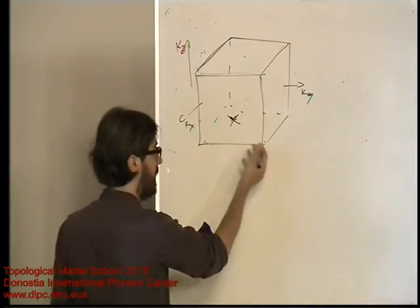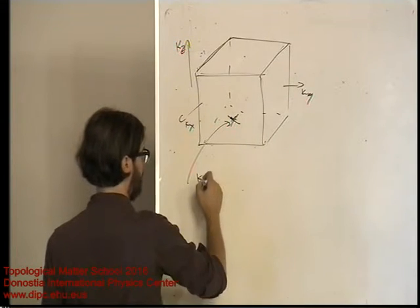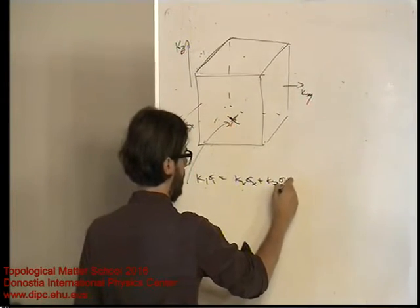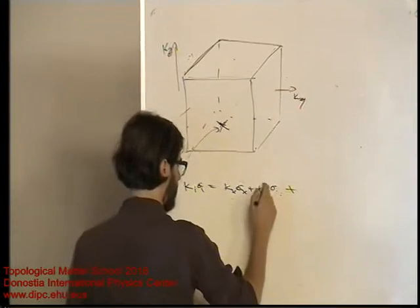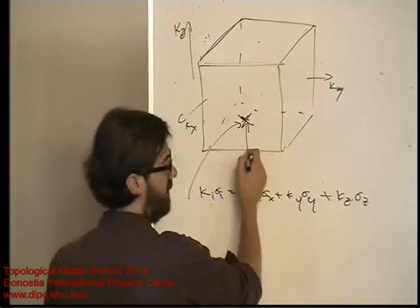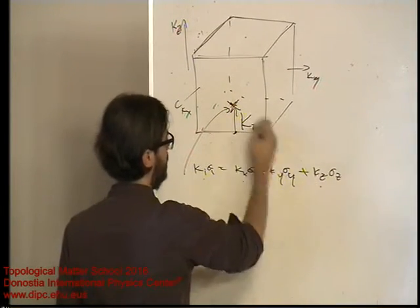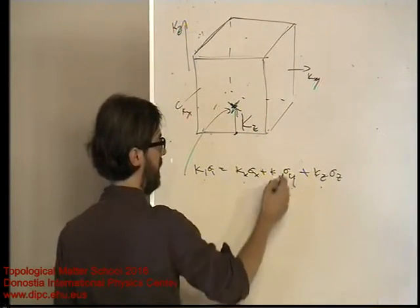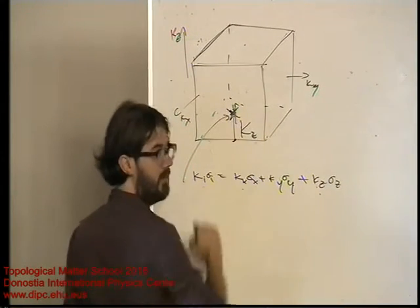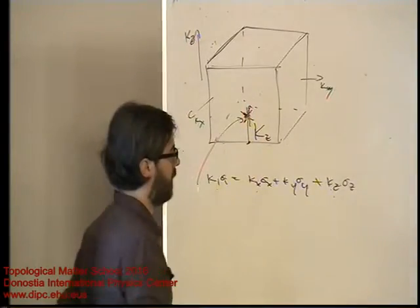But there's another way of understanding why you can't have just one. If there's a Weyl node here, the Hamiltonian around this point is kI sigma I, which I expand as kx sigma x plus ky sigma y plus kz sigma z. If you think of this k as being the origin of kz at some big kz, this is just the difference between that kz and the momentum where you want to look.